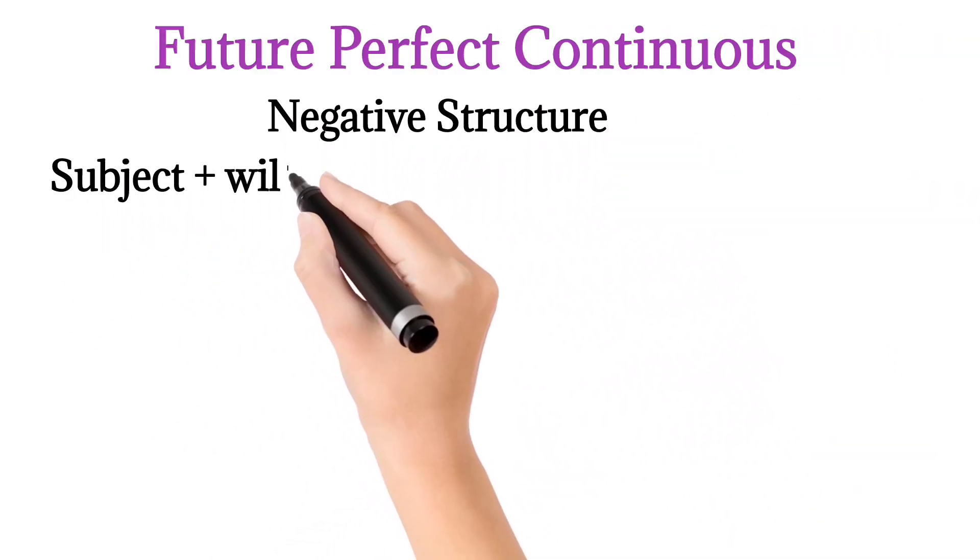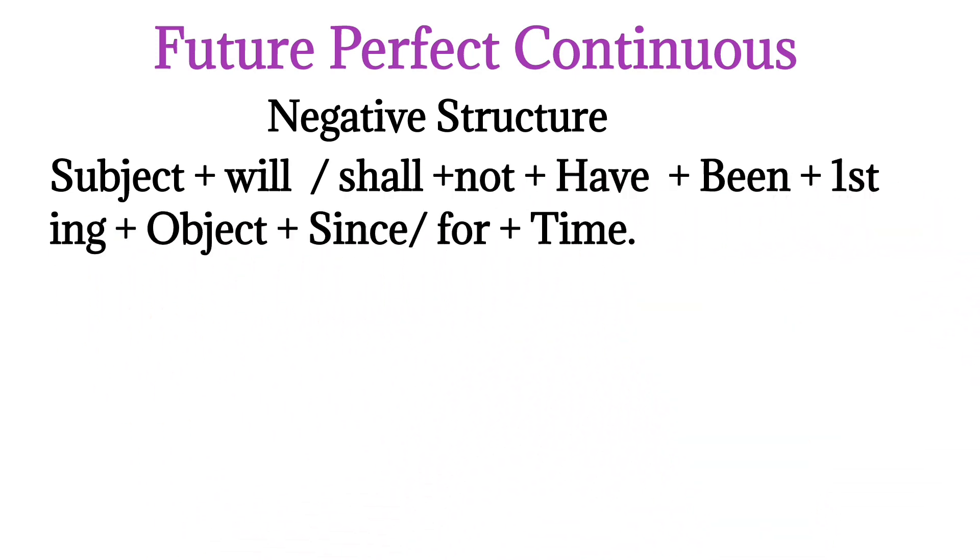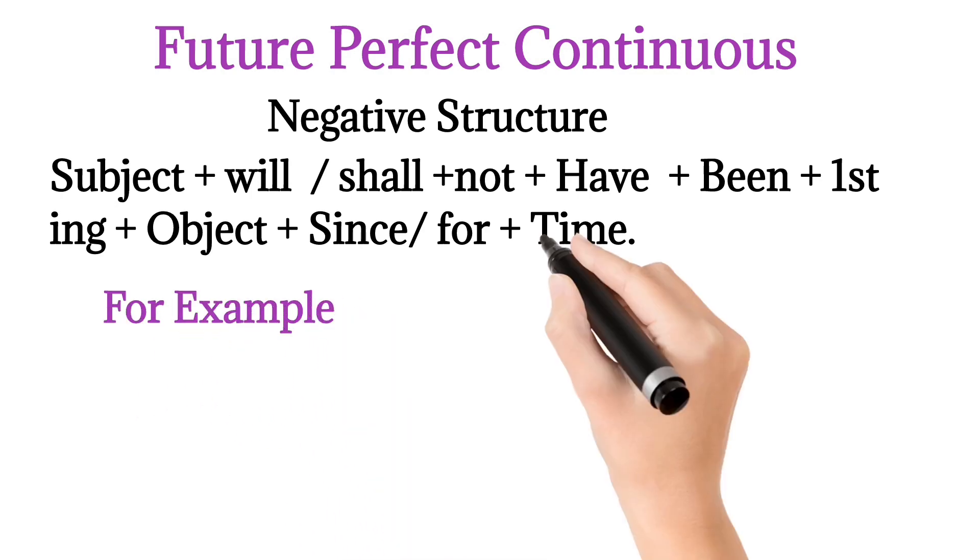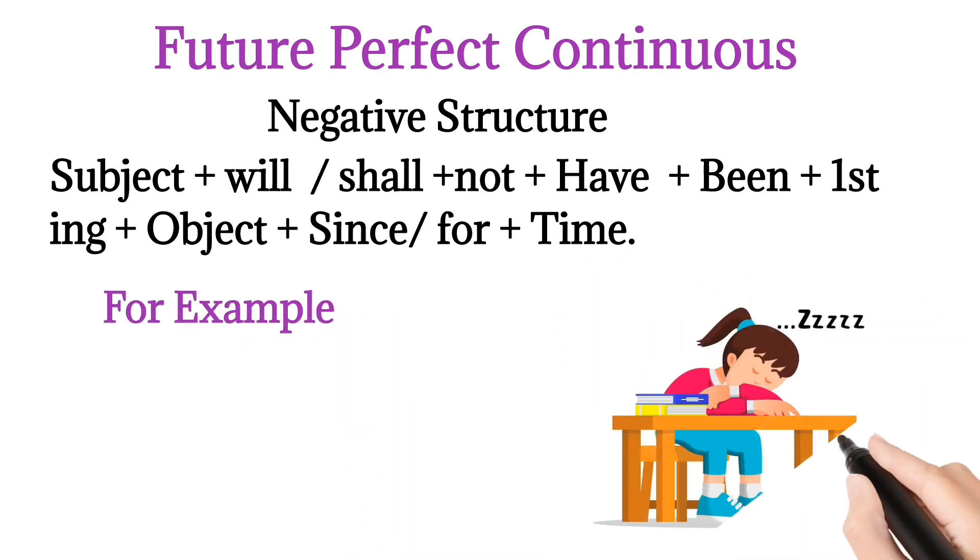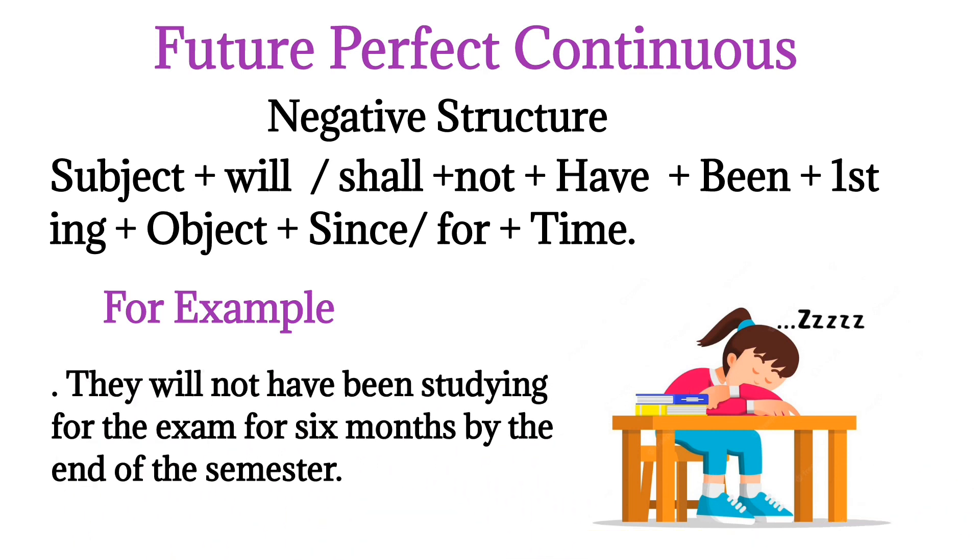Negative structure: Subject plus will not plus have been plus verb plus -ing, object plus since or for and time. Example: They will not have been studying for the exam for 6 months by the end of the semester.